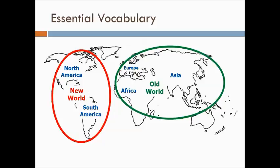Some other terms to know — circled in green on the right-hand side of the slide — is what we call the Old World. This is the world that Europeans already knew about: the continents of Africa, Asia, and Europe. Now the New World wasn't brand new, but it was new to Europeans. What's circled in red is what they called the New World — North America and South America — which the people of Europe had not discovered before.